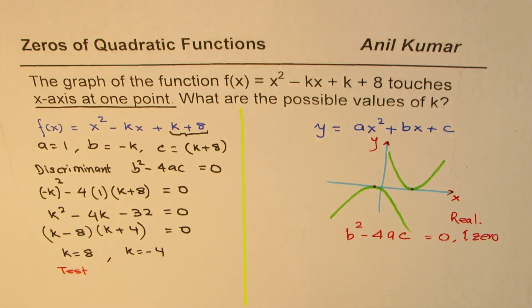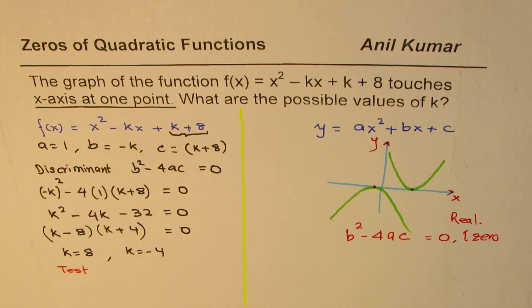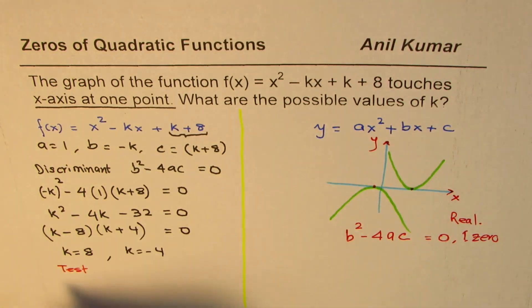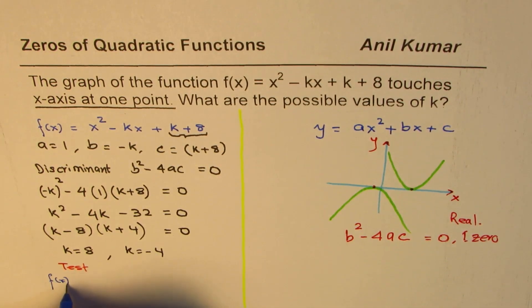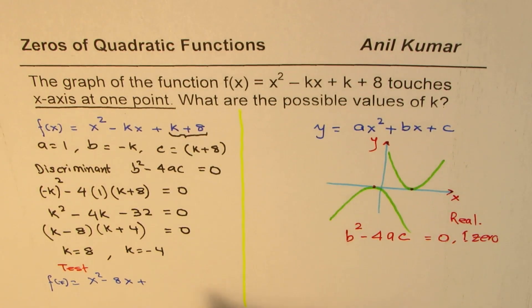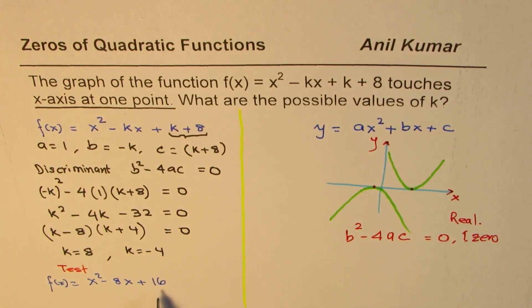What I mean to say is, you could write down your equation, substituting k as 8. So what do you get? So you get one of the functions as equals to x square minus 8x plus 8 plus 8 is 16.